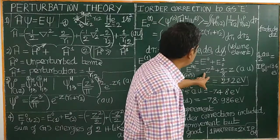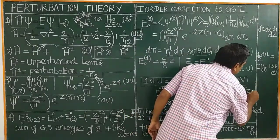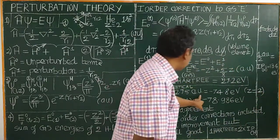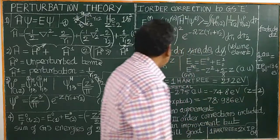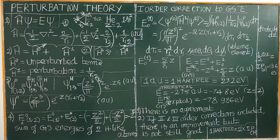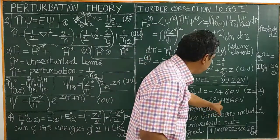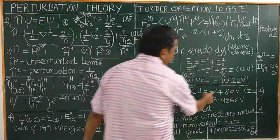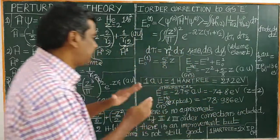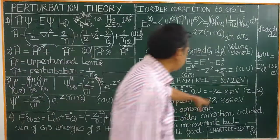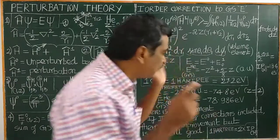If we substitute Z = 2 for helium, we get the theoretical ground state energy. The experimental ground state energy of the helium atom, obtained from photoelectron spectroscopy, is −78.996 eV. There is a notable difference — no full agreement between theoretical and experimental values — but we have carried out only the first-order correction.